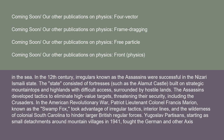In the 12th century, irregulars known as the Assassins were successful in the Nazari Ismaili state. The state consisted of fortresses such as Alamut Castle, built on strategic mountaintops and highlands with difficult access, surrounded by hostile lands. The Assassins developed tactics to eliminate high-value targets threatening their security, including the Crusaders. In the American Revolutionary War, Patriot Lt. Col. Francis Marion — known as the Swamp Fox — took advantage of irregular tactics, interior lines, and the wilderness of colonial South Carolina to hinder larger British regular forces.